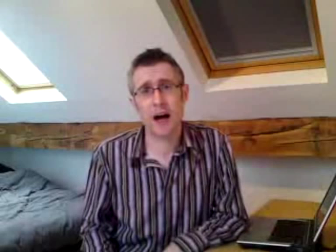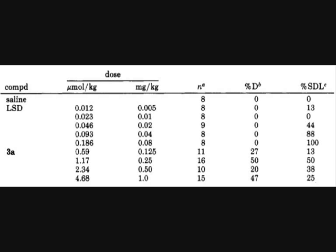Here you're looking at a table of data showing how the rats responded to LSD, the hallucinogen, and how they responded to MDAI, which is compound 3A. If you look at the percentage SDL — that's when the rats press the lever in response to the drug — you'll see that at reasonable doses, 100% of rats responded to LSD, whereas even at much higher doses, only a quarter of rats responded to MDAI. That shows MDAI does not substitute for LSD; it does not behave as a hallucinogen.